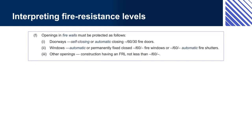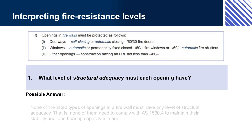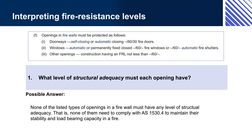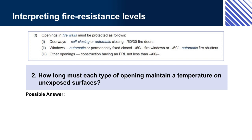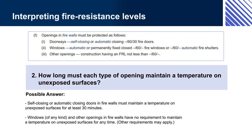Interpreting fire resistance levels. Question 1: What level of structural adequacy must each opening have? Answer: None of the listed types of openings in a firewall must have any level of structural adequacy — that is, none of them need to comply with AS 1530.4 to maintain their stability and load-bearing capacity in a fire. Question 2: How long must each type of opening maintain a temperature on unexposed surfaces? Answer: Self-closing or automatic closing doors in firewalls must maintain a temperature on unexposed surfaces for at least 30 minutes. Windows of any kind and other openings in firewalls have no requirement to maintain a temperature on unexposed surfaces for any time.